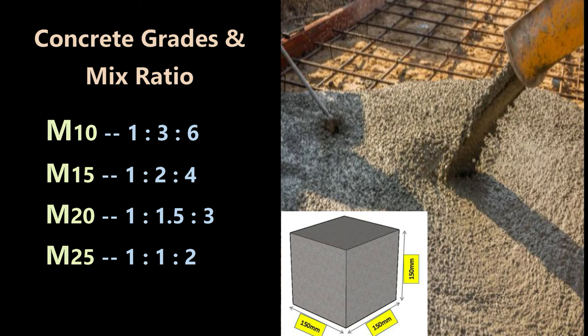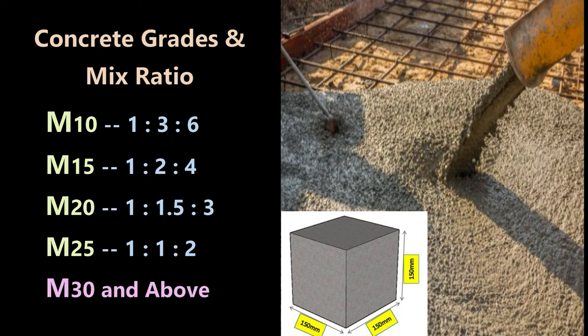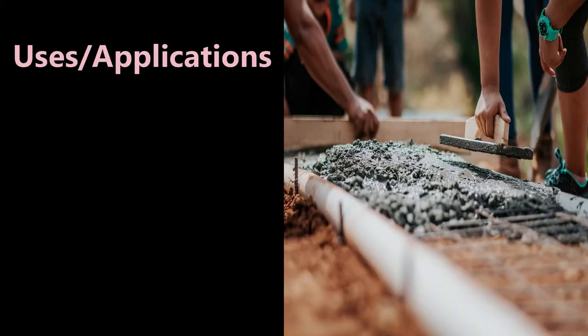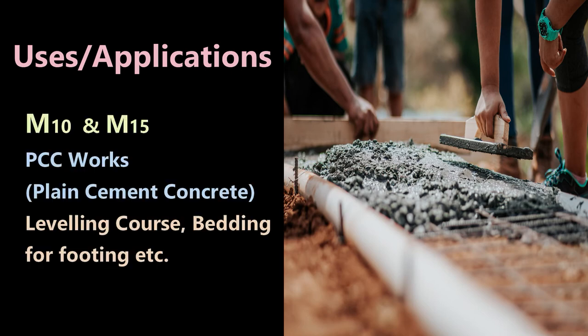M25 grade of concrete has a ratio of 1:1:2 — one part cement, one part sand, and two parts coarse aggregate — achieving a compressive strength of 25 N/mm² at 28 days. For M30 and above, the mix ratio is not specified in the code; instead, mix design is calculated as per IS 10262:2019 and IS 456.